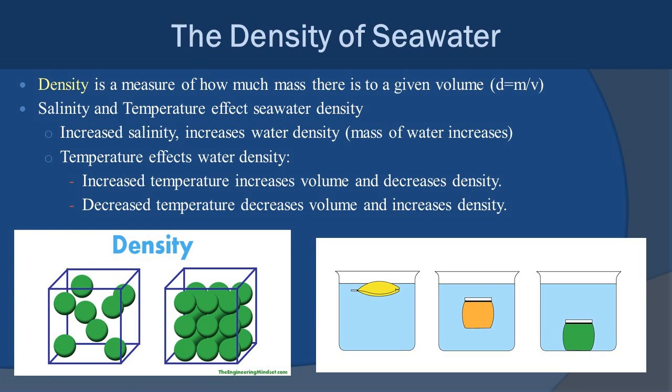Now let's turn our attention to the density of seawater. Density is written as D = m/v — density equals mass divided by volume, or how much stuff is in a given volume. When we talk about salinity and temperature affecting density, this is where we get a lot of variation in how the ocean is structured. If you add salt to water, it increases the density — the mass of the water increases. There's an inverse relationship between temperature, volume, and density: as you increase temperature, volume increases and thus density decreases.